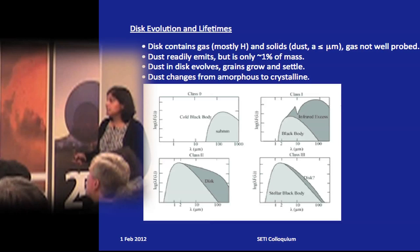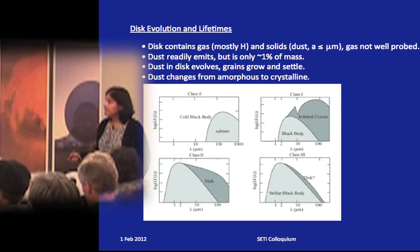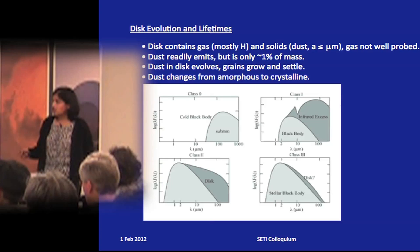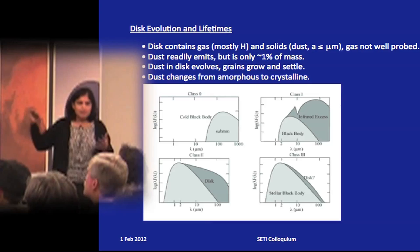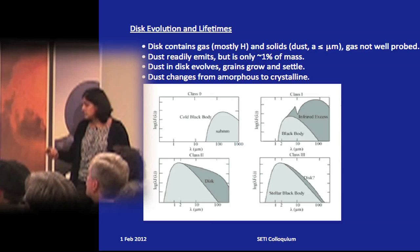Here I show the spectral energy distribution — wavelength versus flux — for roughly the same four stages of evolution. When the object is cold, emission is mostly in the sub-millimeter. As the central object gets hotter, an infrared excess appears — the dark gray region representing dust emission. As the disc evolves and the central object gets even hotter, the excess eventually disappears. By studying SEDs you can infer a great deal about disc evolution.